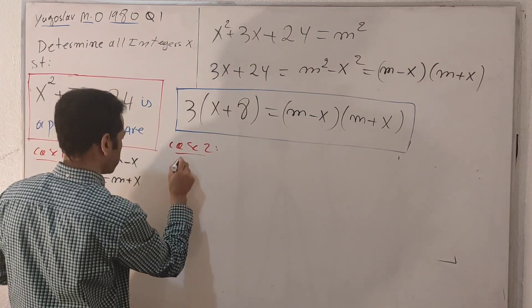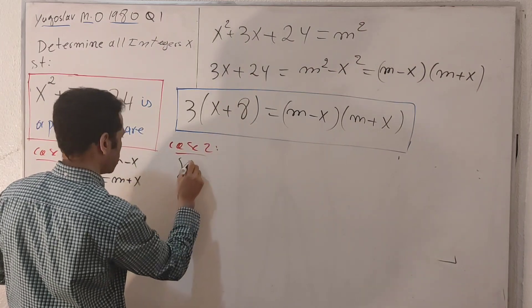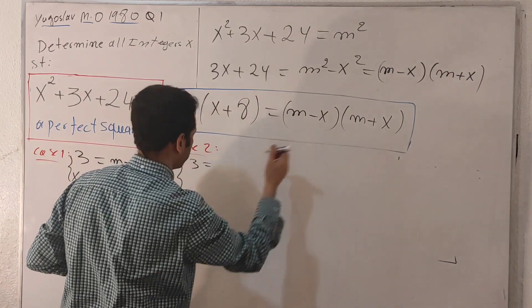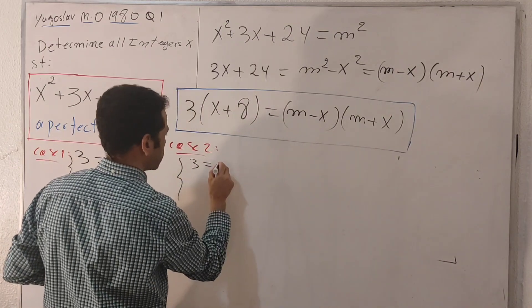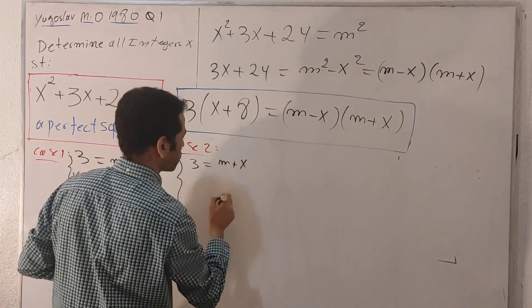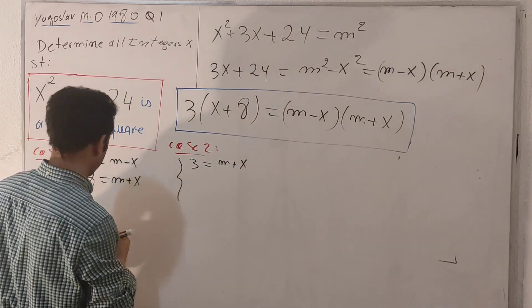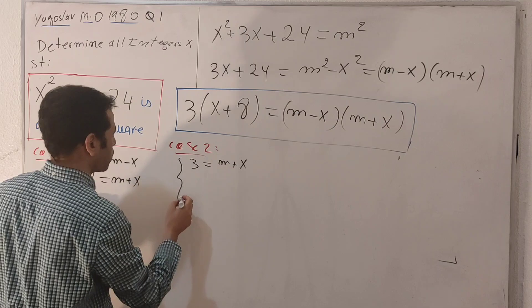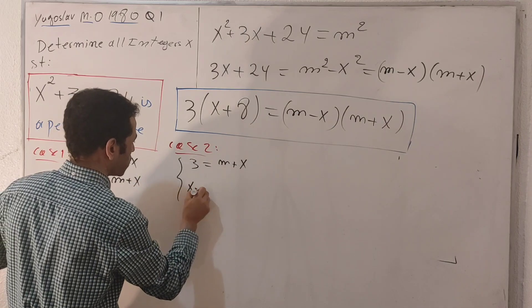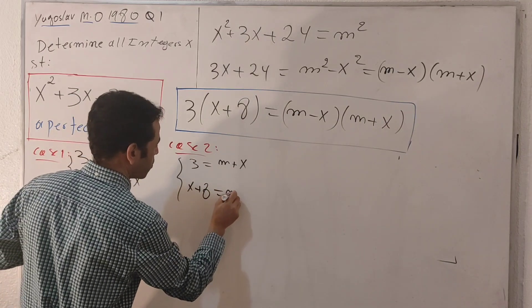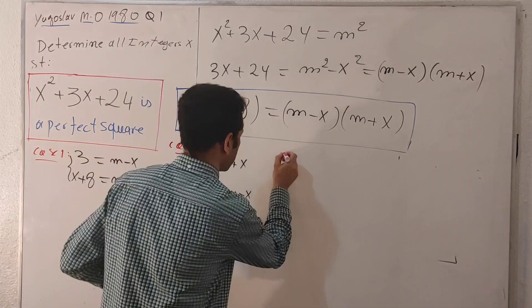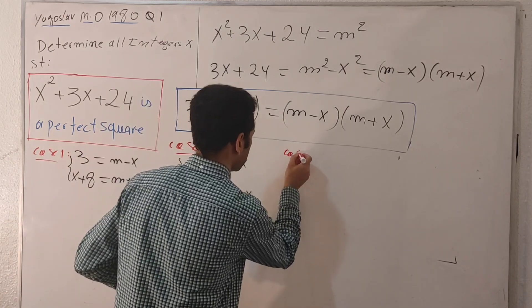This time for case two: 3 equals (m plus x), and the next term gives us x + 8 = m minus x.